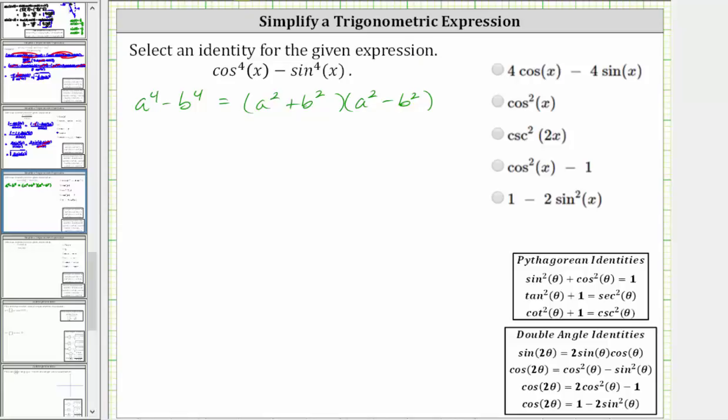Applying this to the trig expression cos^4(x) - sin^4(x), we will have two factors.